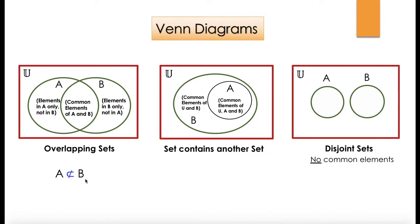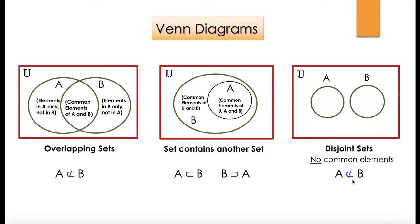In this case we say A is not a subset of B because all elements of A are not part of B. Here A is a proper subset of B because A is contained within B, and B is a proper superset of A. Here too A is not a subset of B and B is not a subset of A.